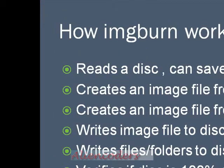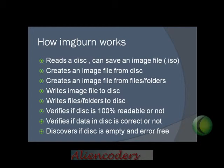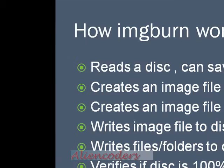IMG Burn reads a disk and you can save an image file with an .iso extension. You can create an image from a disk — for example, if you have an operating system disk of Windows, Linux, or Ubuntu, you can make an image copy and save it to your hard disk, or directly make a copy to another CD or DVD. You can also create an image file from folders, and write that image file to disk. After writing, it checks whether everything was written properly or if there are any errors.